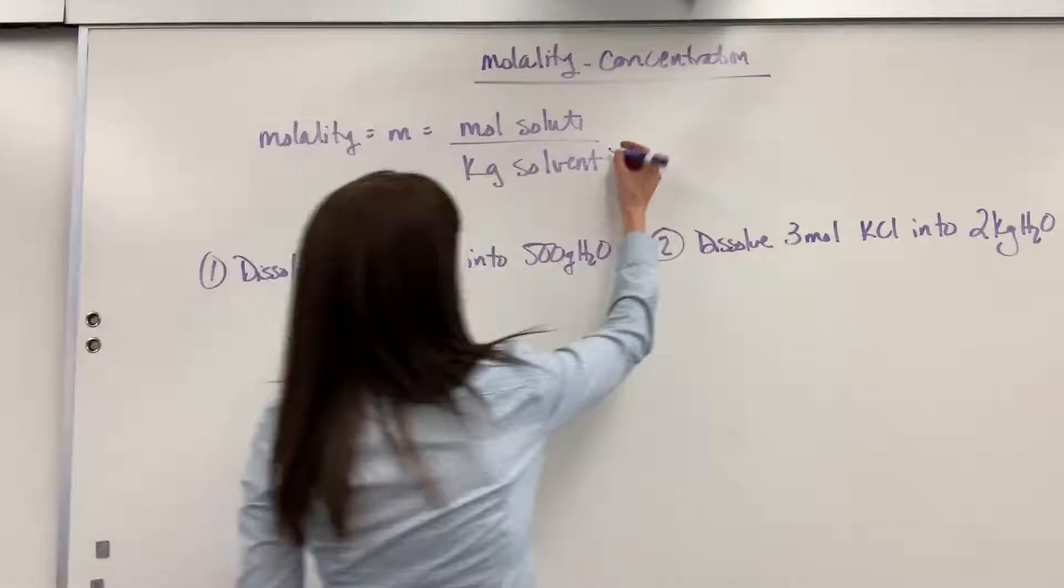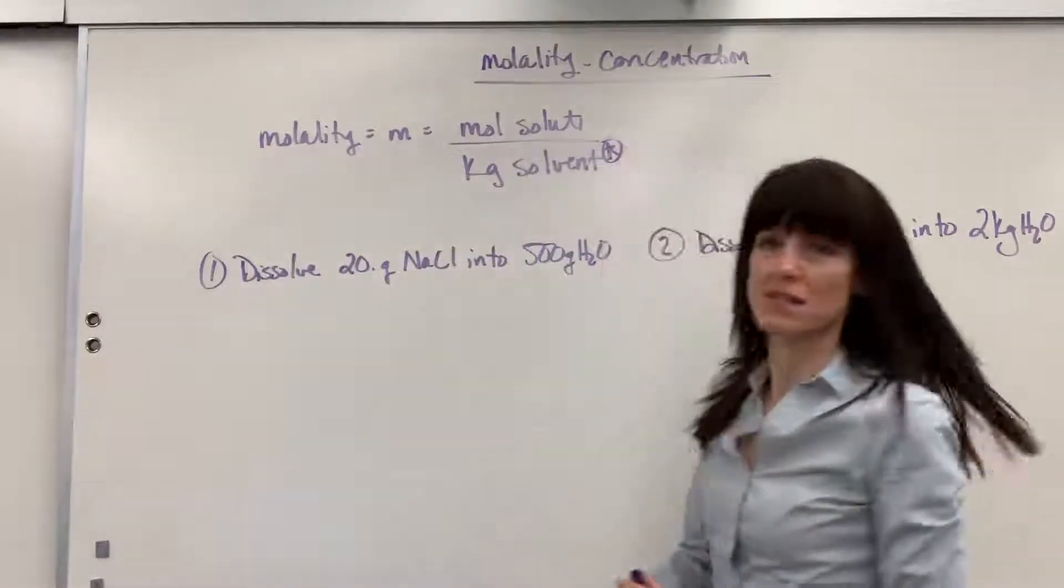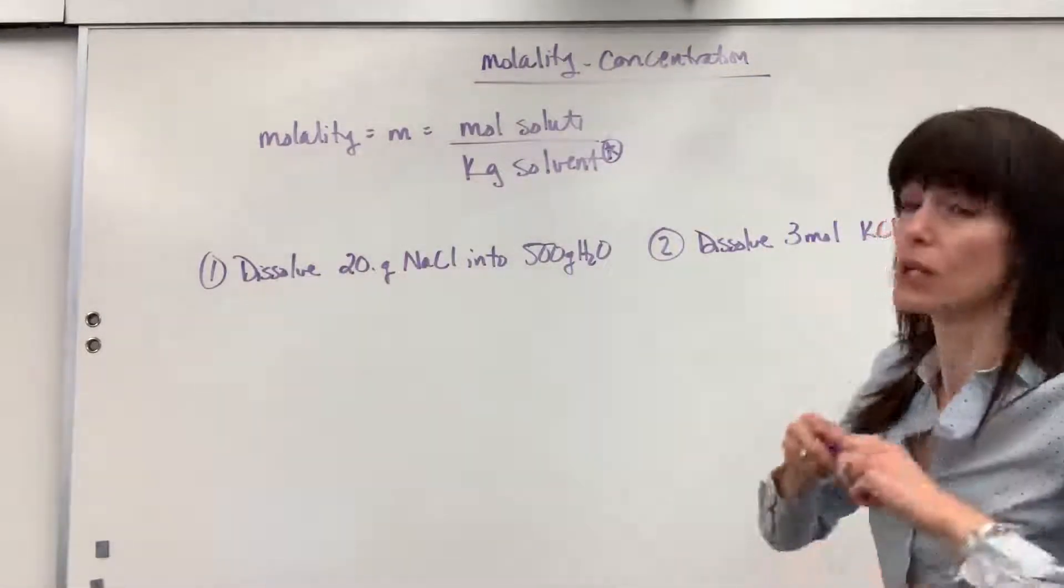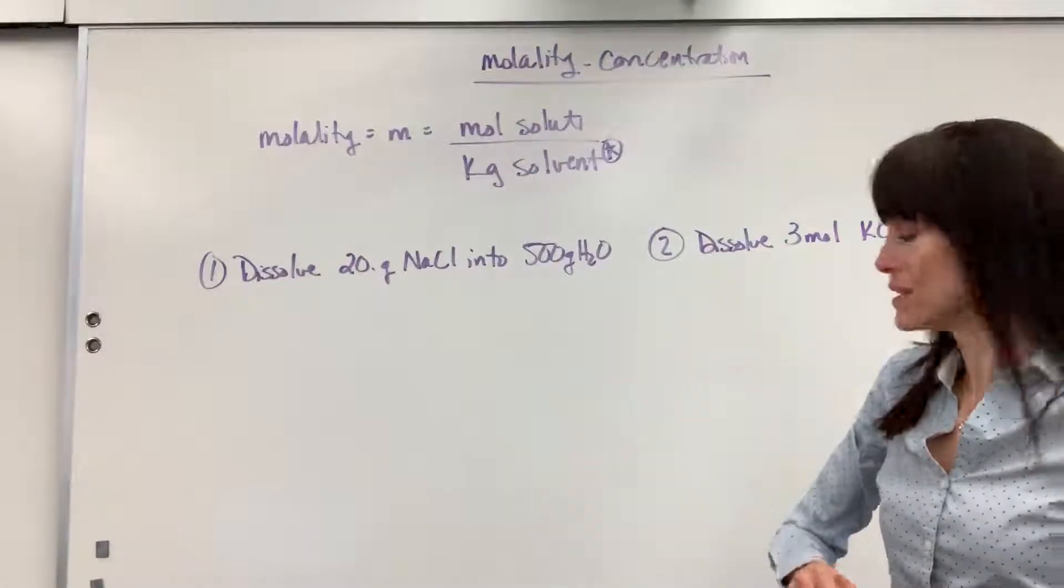It's going to be moles of solute divided by the kilogram of solvent. So I'm going to put a star right here by that solvent. So you're going to have to remember, lowercase m, and solvent is in the denominator.